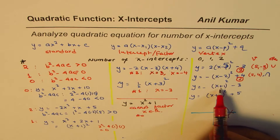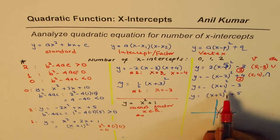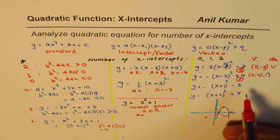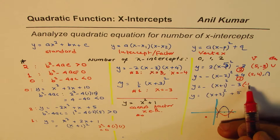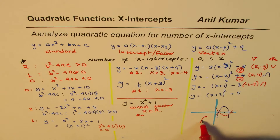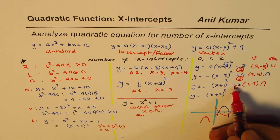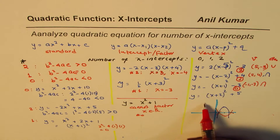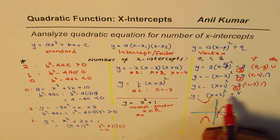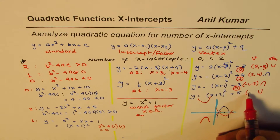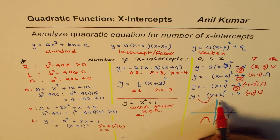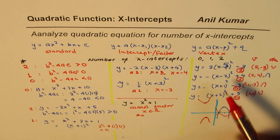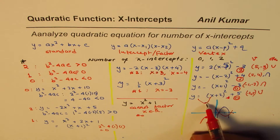For y = -(x + 1)² - 3, the vertex is at (-1, -3), which is below the x-axis, and it opens downwards — it will never intersect the x-axis, so the number of x-intercepts is 0. For y = (x + 2)² + 5, the vertex is at (-2, 5), opening upwards from above — again 0 x-intercepts.